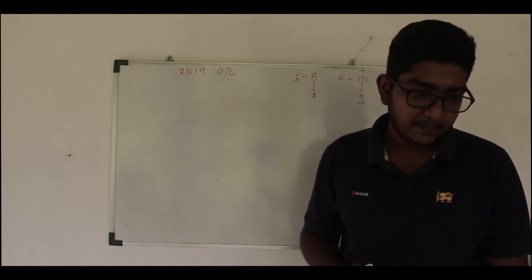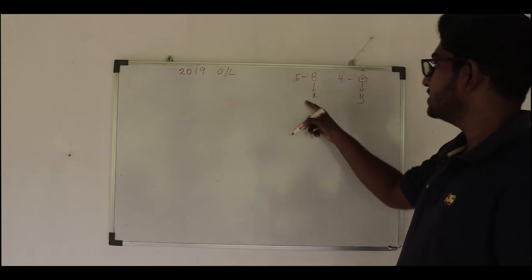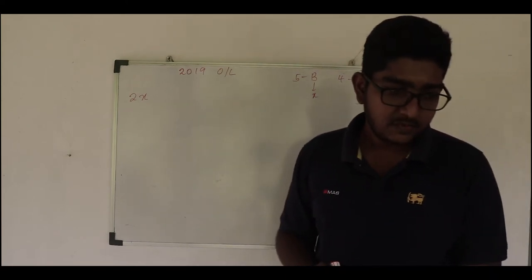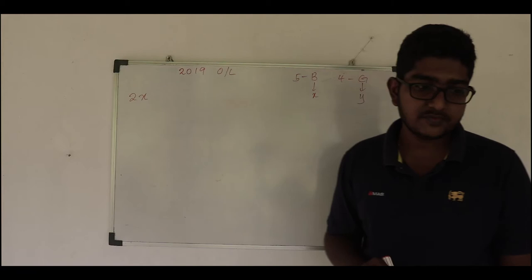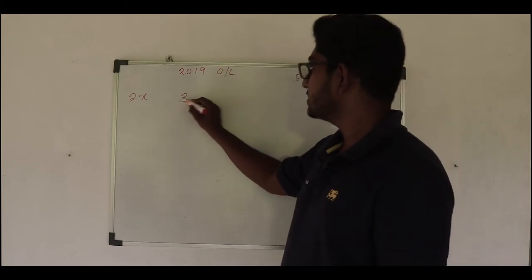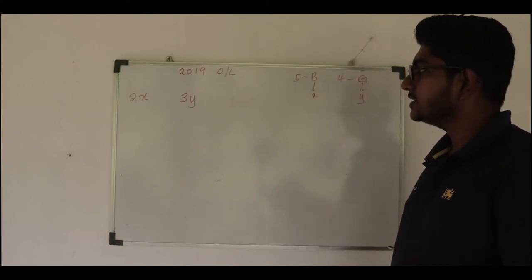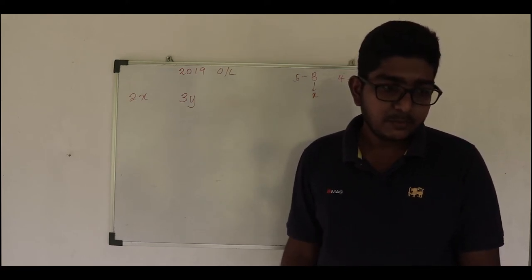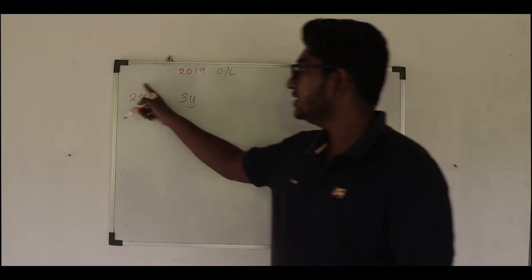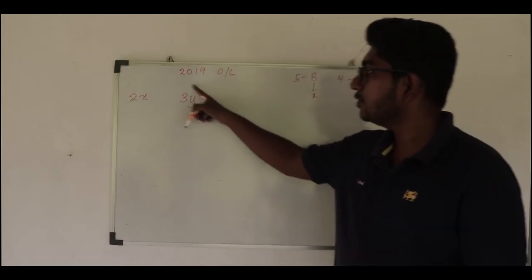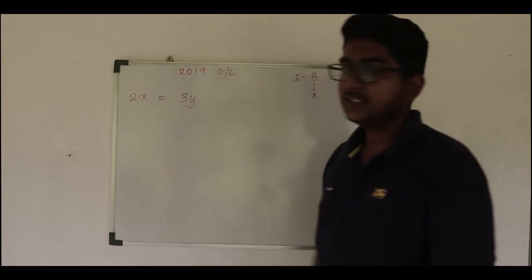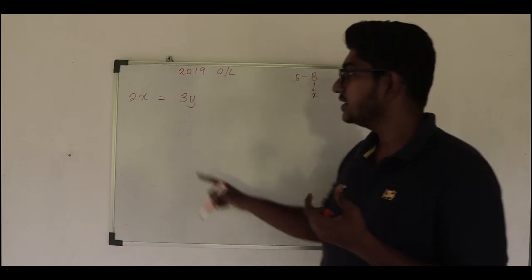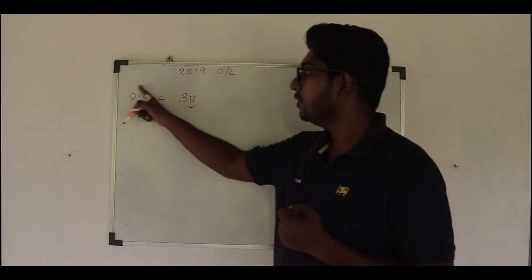The first information: the price of two boys' costumes is 2x. The price of two boys' costumes was one thousand rupees more than the price of three girls' costumes, which is 3y. To construct an equation I must have equal sides, but directly I cannot equate these two because there is a difference of one thousand rupees.